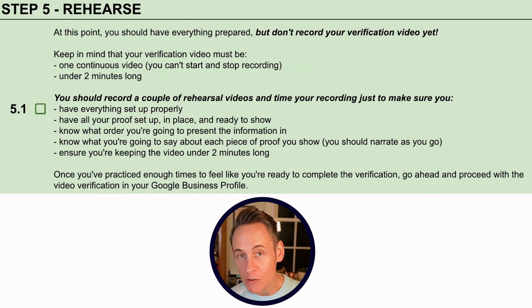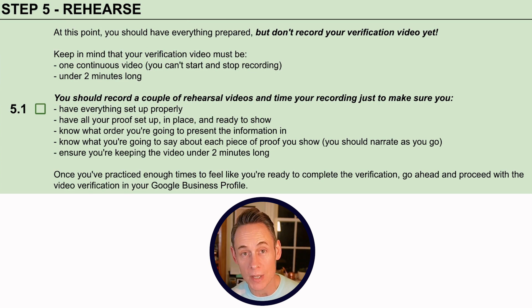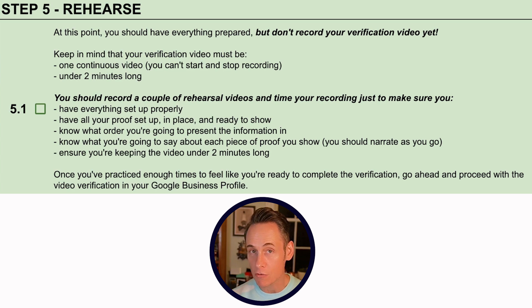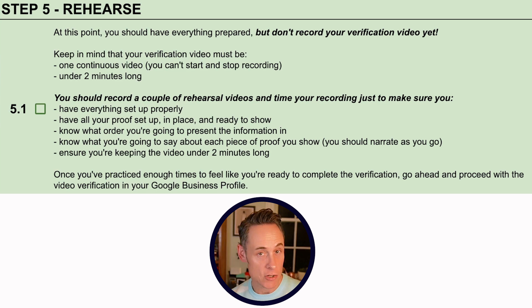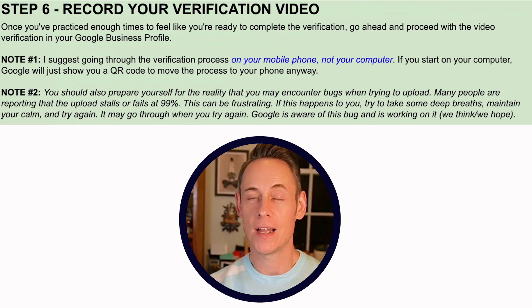Once your settings are right, your GBP is set up, you know what evidence to show, and you have a plan for the order — make a rehearsal video first. Go out to the street, record your video, and see how long it takes. You need to get this under two minutes — I could not get a two-minute video to upload. You have to show everything you need to show quickly, so do a test run to get the feel for it before you record the actual submission video.